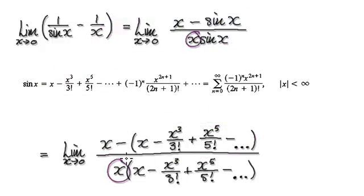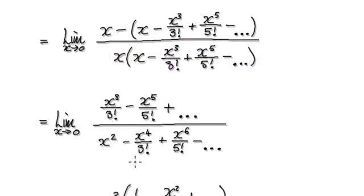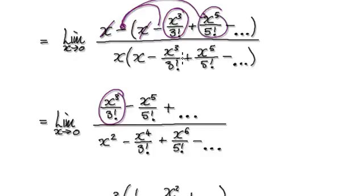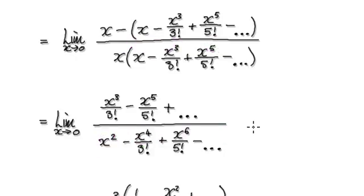Down here you've got your x and your x. And then put this into here — that will then give you this. Now tidy this up. If you tidy up the numerator, these two x terms will cancel out, and you're left with a positive x to the power of 3 over 3 factorial. Then this next term will be negative, and so on, all the way to infinity. For the denominator, this times this gives x to the power of 4, this times this gives x to the power of 6, and so on.